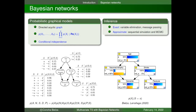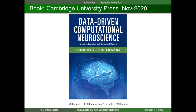For instance, if we have evidence that a patient has had a stroke, we propagate this information through the network to compute the probability of each other variable. This is an example taken from Bielsa & Larrañaga 2020, a book published by Cambridge University Press dealing with machine learning and statistical models applied to neuroscience, where we have been working in recent years. We learn Bayesian networks from data — learning both the parameters and the structure.